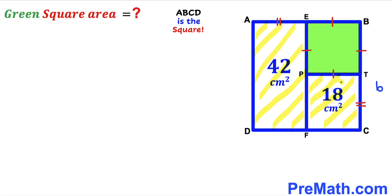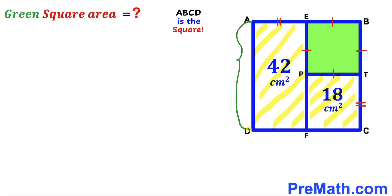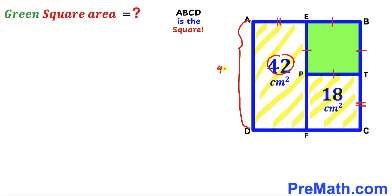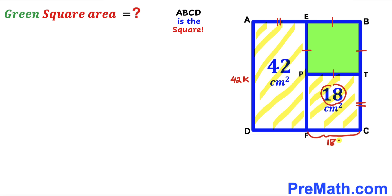Our next step is to focus on the two rectangles PTCF and AEFD. One side length is the same for both rectangles, so there is a relationship between side AD and side CF. The area of rectangle AEFD is 42 centimeters square, so side AD can be written as 42 times some constant K. Likewise, for rectangle PTCF with area 18, side CF can be written as 18 times K.